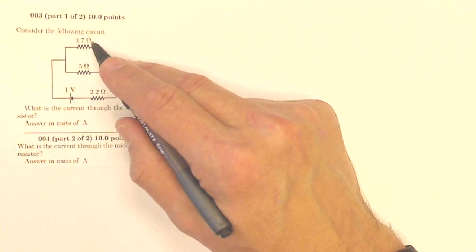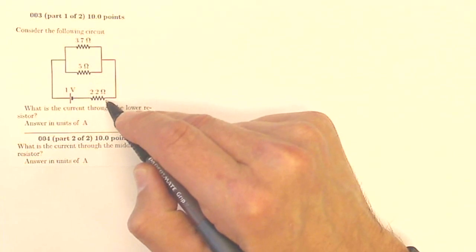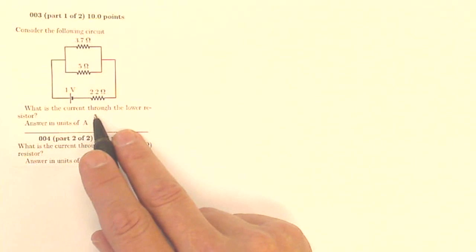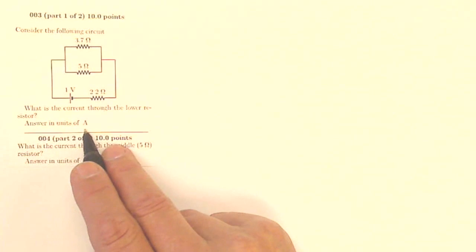Consider the following circuit: 3.7 ohms, 5 ohms, 2.2 ohms, and a 1-volt battery. What is the current flowing through the lower resistor, answering units of amps?